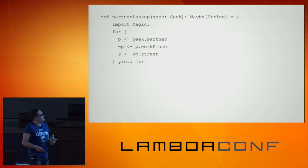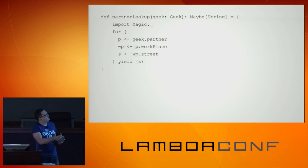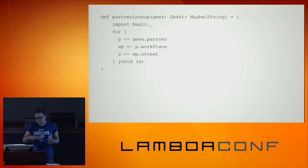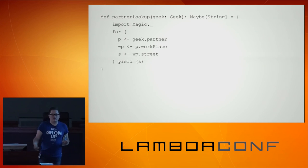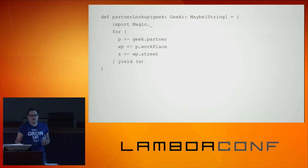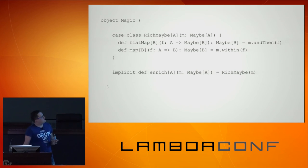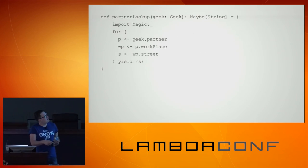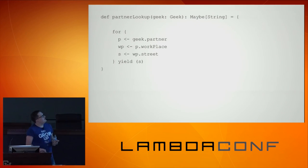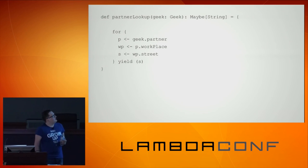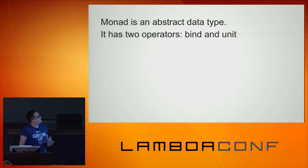So that was just a little bit of magic. To have for comprehension in Scala, you cannot call your methods in the monad 'bind' or 'andThen' or whatever — you have to call it map. So that magic was simply transforming the andThen method to flatMap and within to map. And that's simply it.